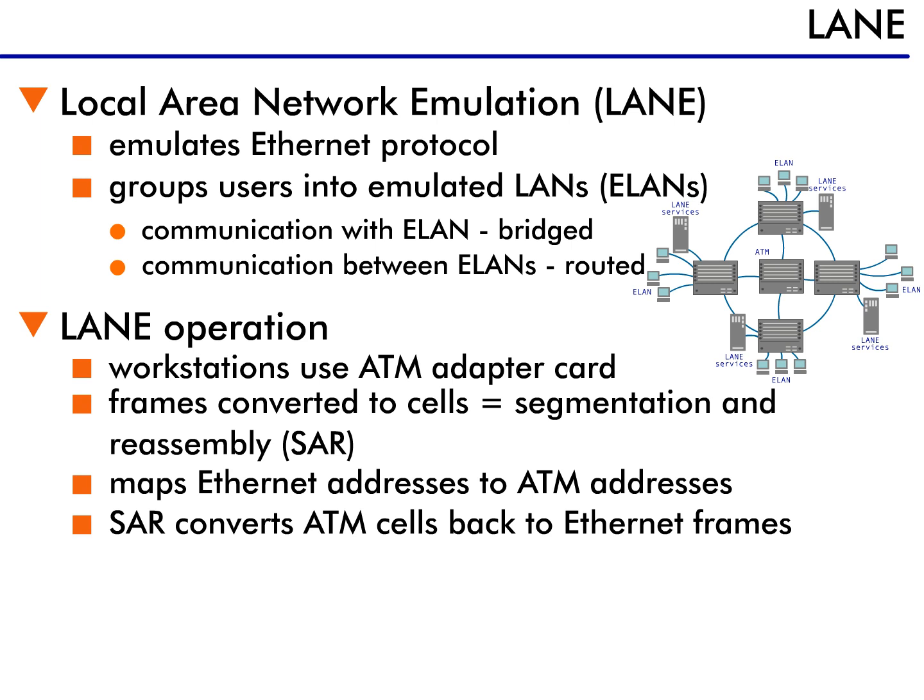Once the destination ATM station is reached, the SAR process reassembles the Ethernet frame for final processing. Often, networks are created with both ATM and Ethernet workstations. In this case, the ATM switch closest to the final destination converts the data to Ethernet, then forwards it as a normal Ethernet packet.